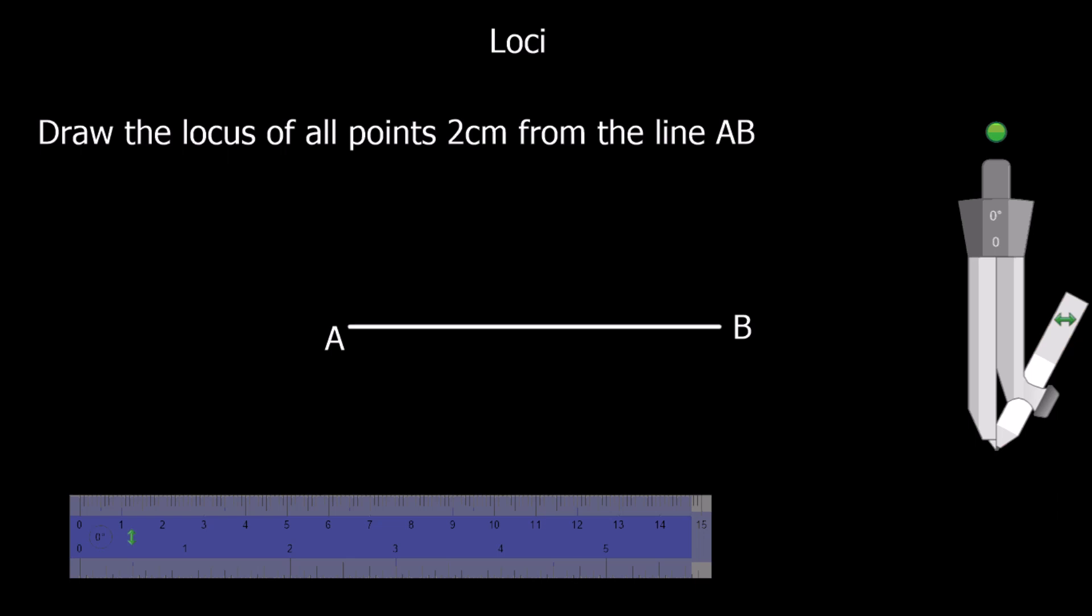So 2 cm from AB is going to create a straight line along the top, and then it's going to curve around the bottom 2 cm away. That's another straight line and curve around A again.